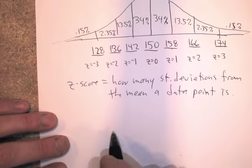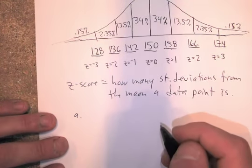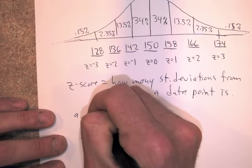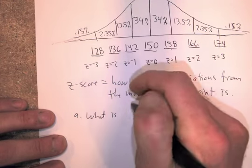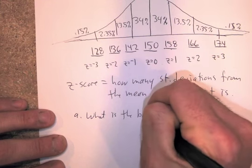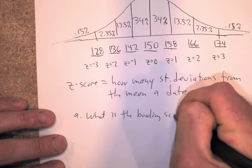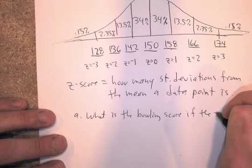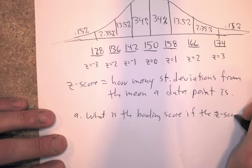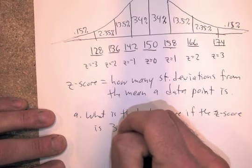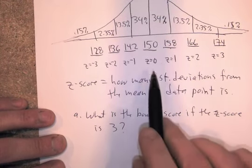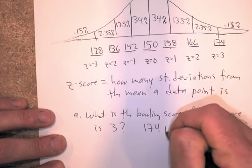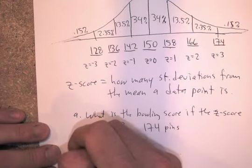Okay, here's some questions based on that problem there. So we'll say something like this. What is the bowling score if the z-score is three? Okay, if you got this drawn out, it's easy. If the z-score is three, okay, 174 pins.